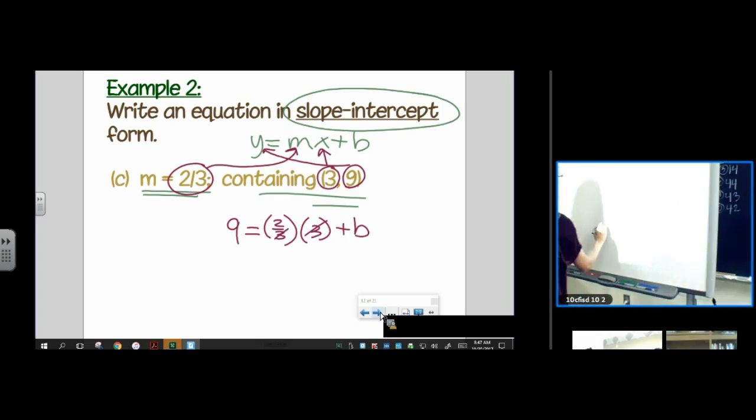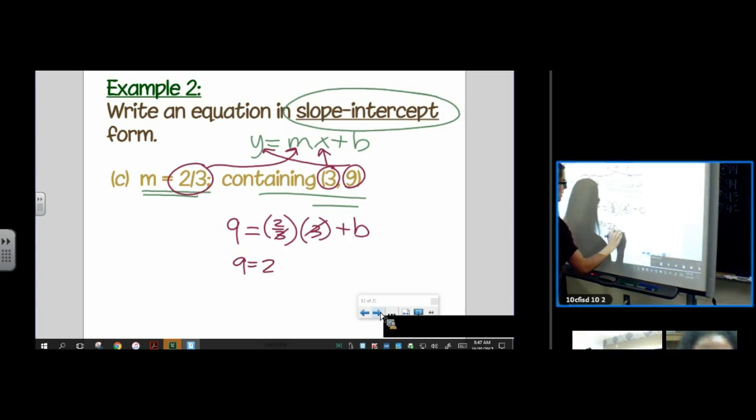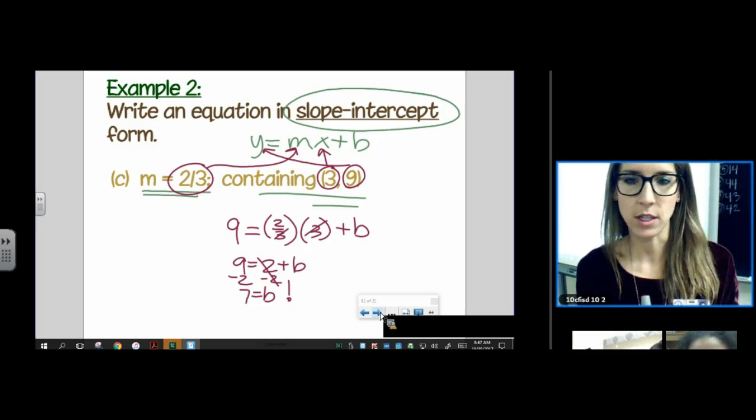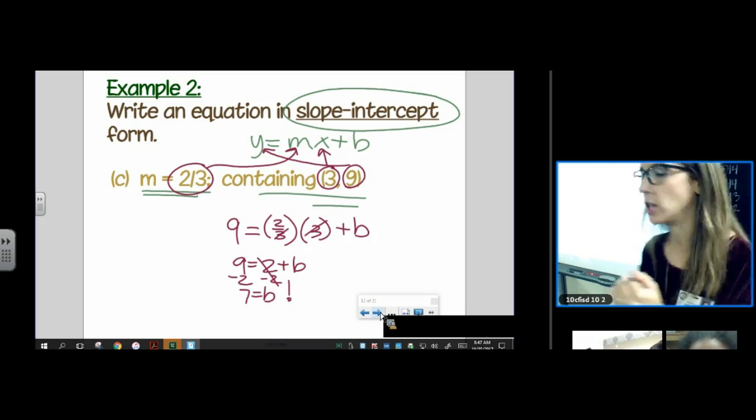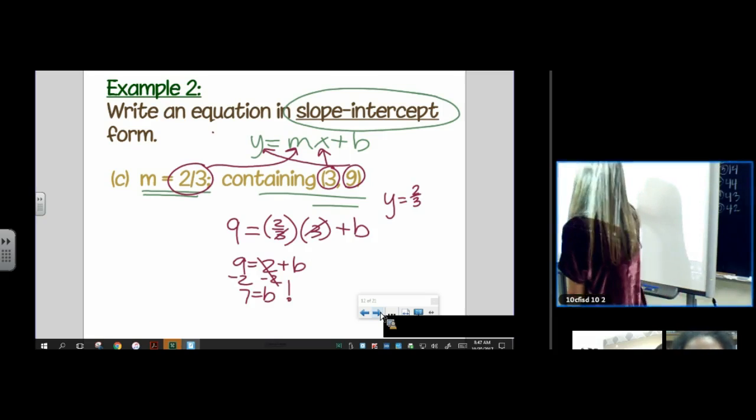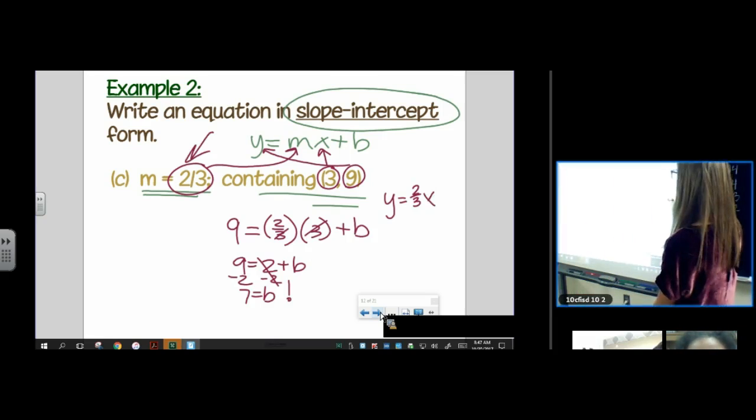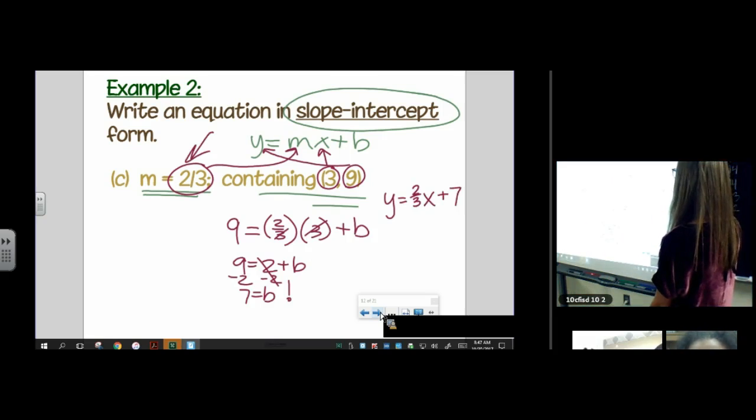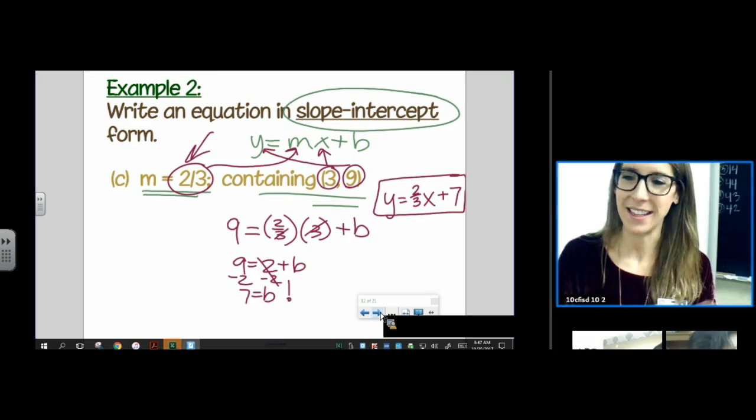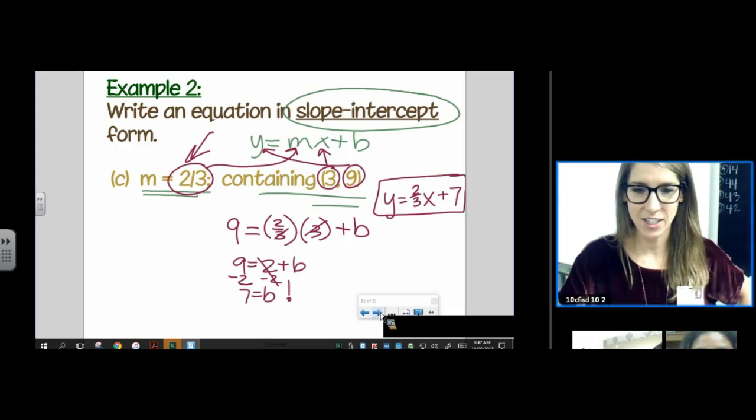What's wonderful is these will cancel or you're welcome to put it in your calculator. Two thirds times three, you'll get two. And so this just says nine equals two plus b. Subtract two from both sides. Yay! B is seven. We found b. Seven is not the answer. It said write an equation. So our equation would be y equals m, because they gave it to us, two thirds x plus b. If it's negative, it'll be y equals mx minus b. Anyways, that's the answer to that one.